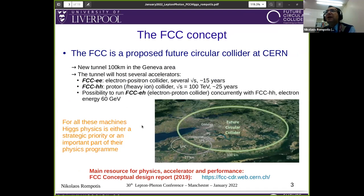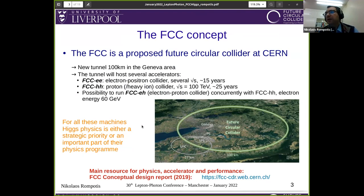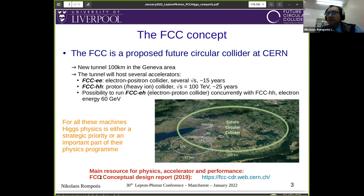FCC stands for Future Circular Collider. It is a proposed project at CERN requiring a new tunnel in the Geneva area. If approved, the tunnel will house two or three accelerators: FCC-ee, FCC-hh, and possibly FCC-eh as well. For all these machines, Higgs physics is either a strategic priority or an important part of their physics program. The main resource for physics, accelerator, and performance is the FCC conceptual design report published in 2019 and available for free at the provided link.